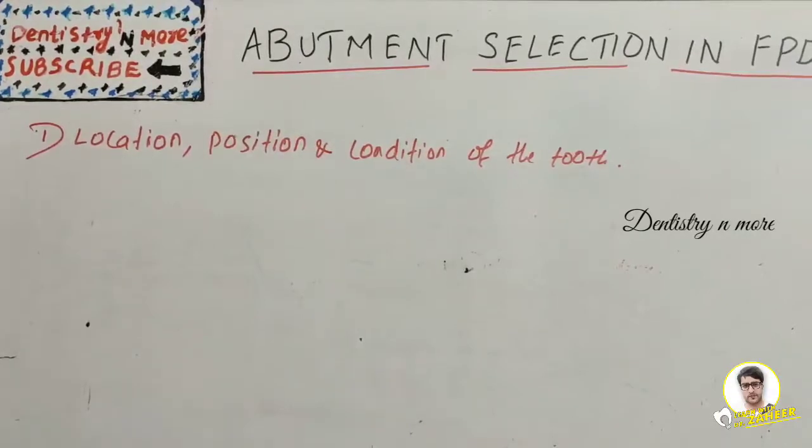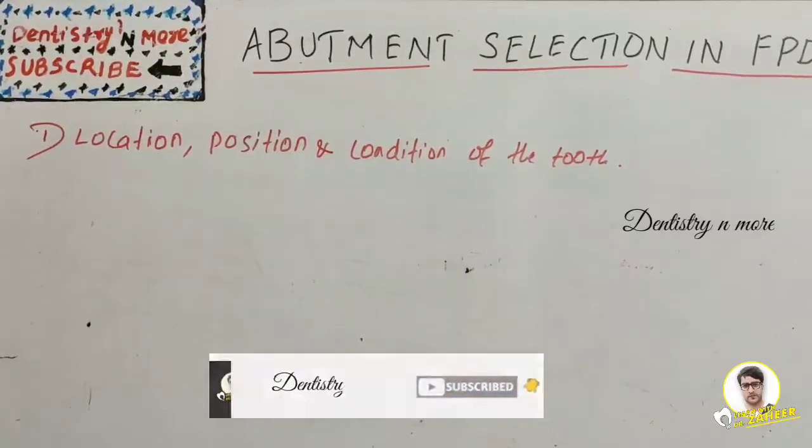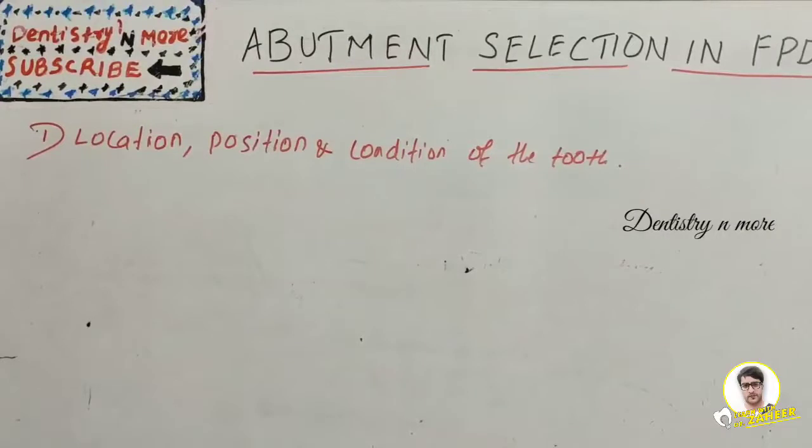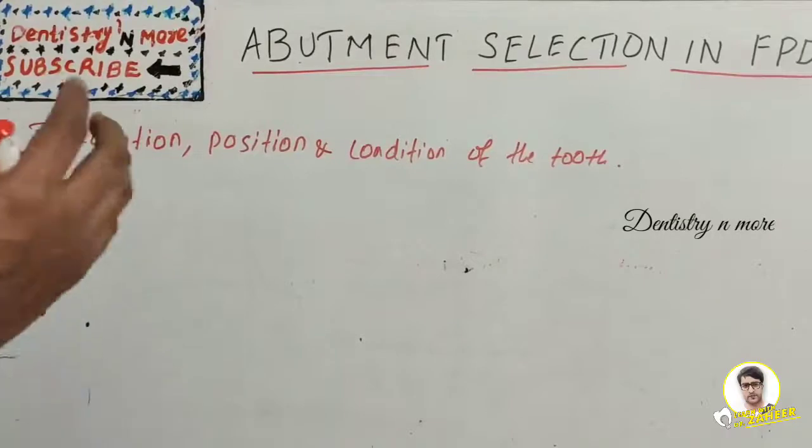Modifications like dowel core or pin-retained amalgam restorations are needed to restore crown morphology in grossly destructive teeth. Vital teeth are preferred, though endodontically treated teeth can be used. Pulp-capped teeth cannot be used as they are always under risk of RCT.